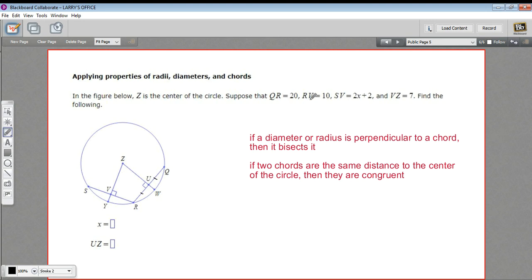We've also been given quite a bit of information, so let's fill this information that we have in on our diagram. First, it says QR equals 20. So this is 20. And I just got done saying that if you have a perpendicular radius or diameter, it bisects the chord. That means this side is 10, and this side is 10.